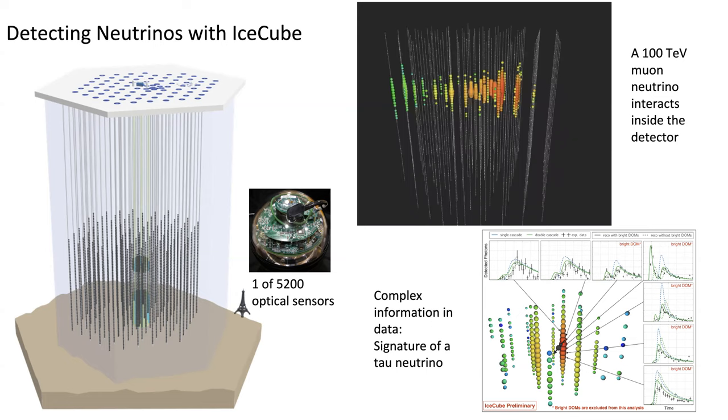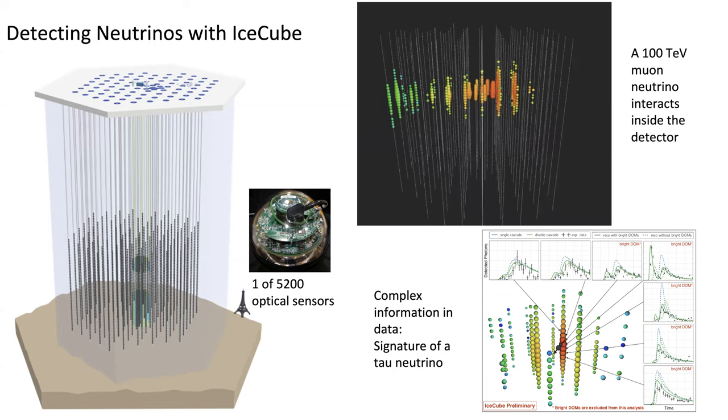At the bottom right, you see an event with complex waveforms in the sensors. These are strings, individual sensors. If you look here, these are the waveforms recorded from the photon signals. You see this characteristic double-pulse structure, which allowed us to identify this event as a tau neutrino.